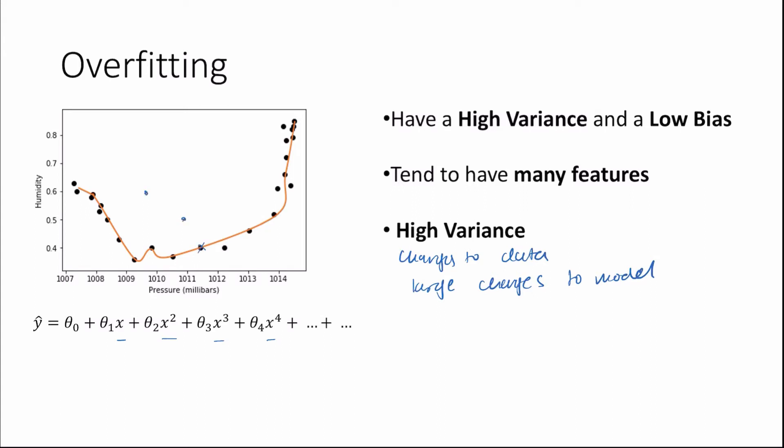Because our model has many features and many parameters — theta 0, theta 1, theta 2, and so on — our model can adjust and most likely create a line that will follow our data closely. This has quite a large impact on our model's estimates. By low bias we mean that our model assumes less about the form or trend that our data takes, since it has many parameters and features to account for many different trends or patterns within the data.